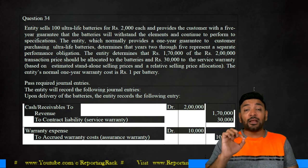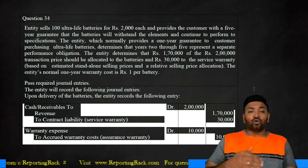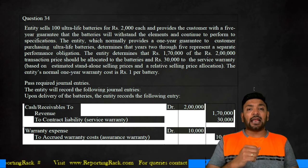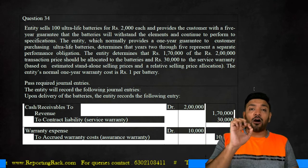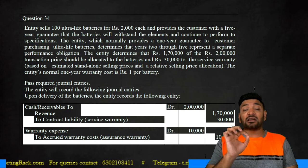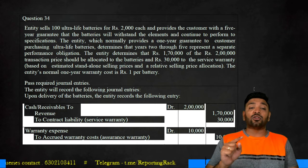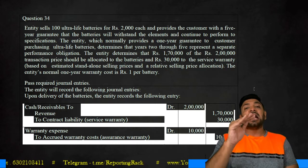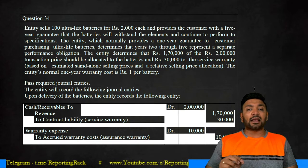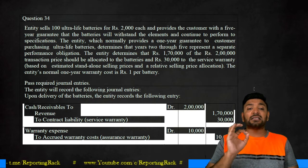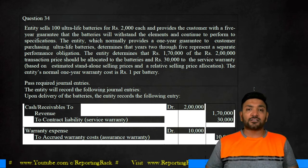The entity's normal one-year warranty cost is just one rupee per battery, which is immaterial relative to the 2,000 price. The journal entry: bank account debit 2 lakhs; to revenue from sale of batteries 1,70,000 — recognized on the date of transaction based on standalone selling price allocation; to contract liability or extended guarantee liability 30,000 — to be recognized as revenue from year two to year five, over four years. For the one-year assurance warranty, the entry is warranty expense debit to provision for warranty: 100 batteries × 1 rupee = 100 rupees.